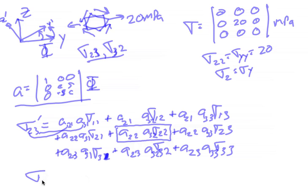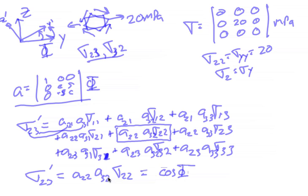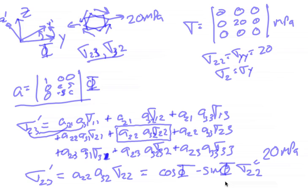So sigma_23 prime equals A_22 times A_32 times sigma_22. A_22 is cosine of phi, and A_32 is the minus sine term — so it's minus sine of phi. Times sigma_22, which is 20 MPa. We can use a calculator and find the value for sigma_23 for any arbitrary rotation angle. We can find how that changes, and plug any angle into equations for each of the other terms as well.